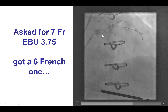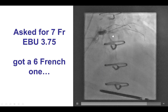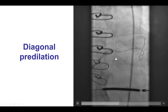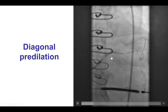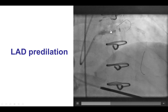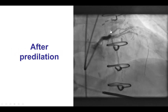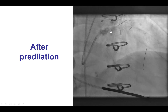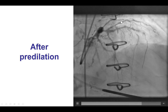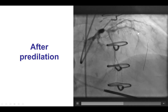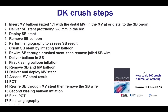We wired both the LAD as well as the diagonal branch using workhorse guide wires, then predilated both vessels — the diagonal as well as the LAD — and there was good expansion. There was still good flow after predilatation was performed. We had to fix the position of the diagonal guide wire, as the LAD wire was actually into a septal branch.